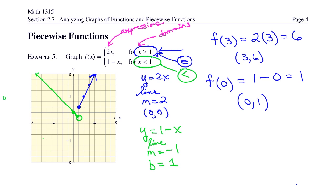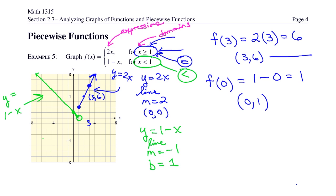When graphing piecewise functions, pay close attention to the anchor points — should they be solid circles or open circles? It depends on what the inequalities tell us. Let's verify: f of 3 equals 6 gives the point 3 comma 6, which is on the right branch. And f of 0 equals 1 gives 0 comma 1, which is the y-intercept on the left branch. Both check out.